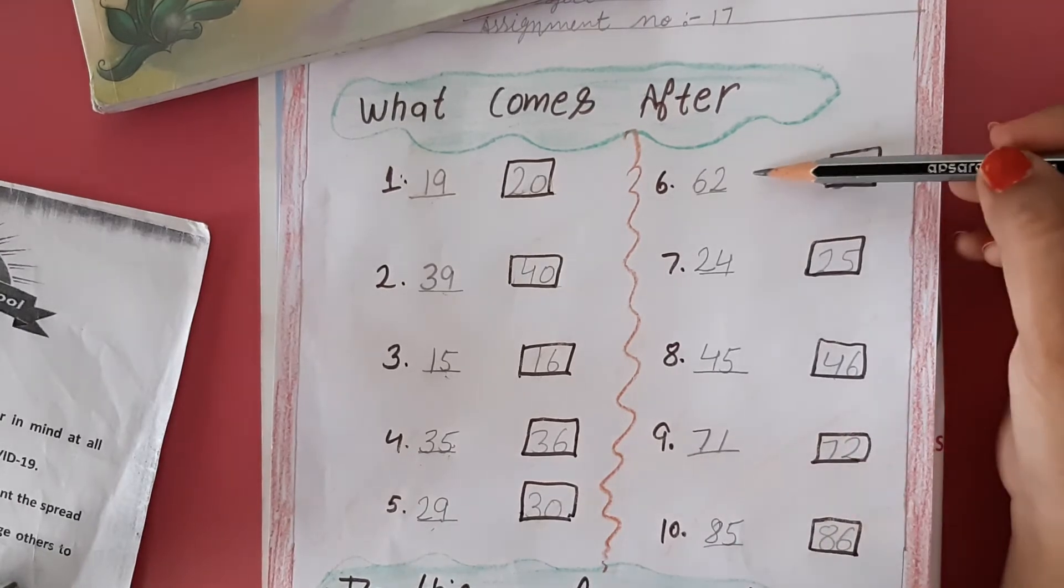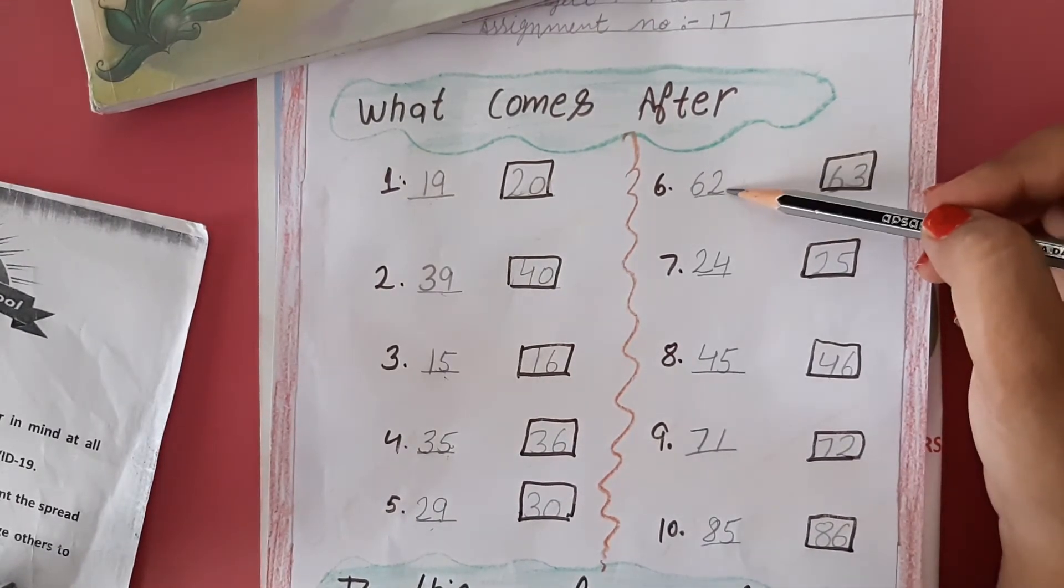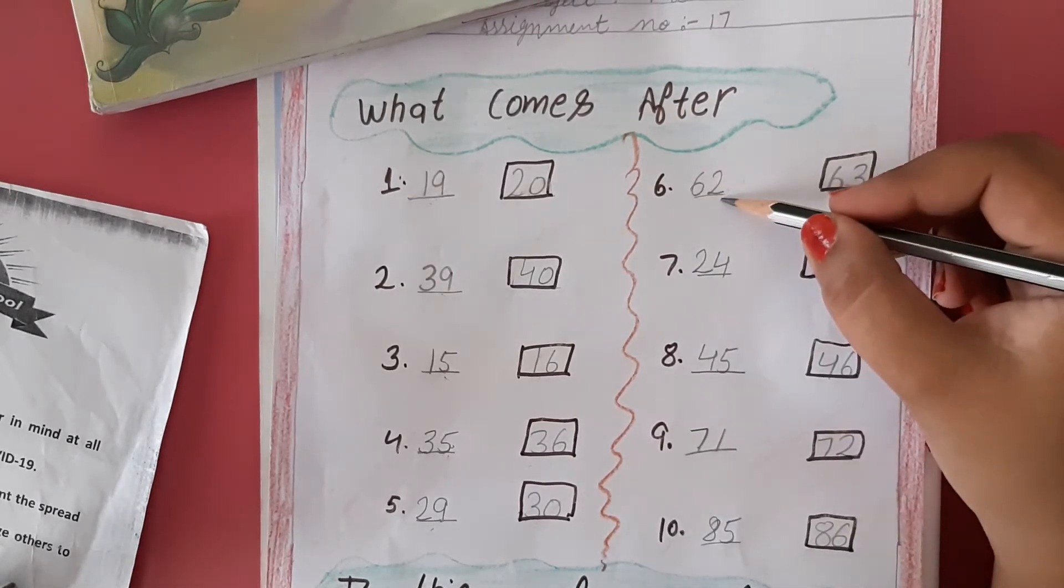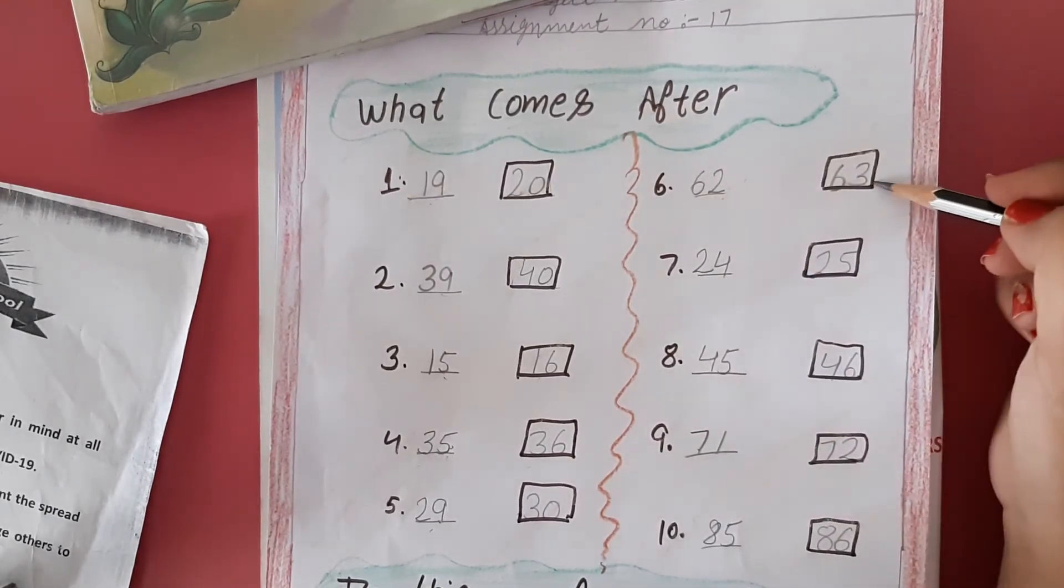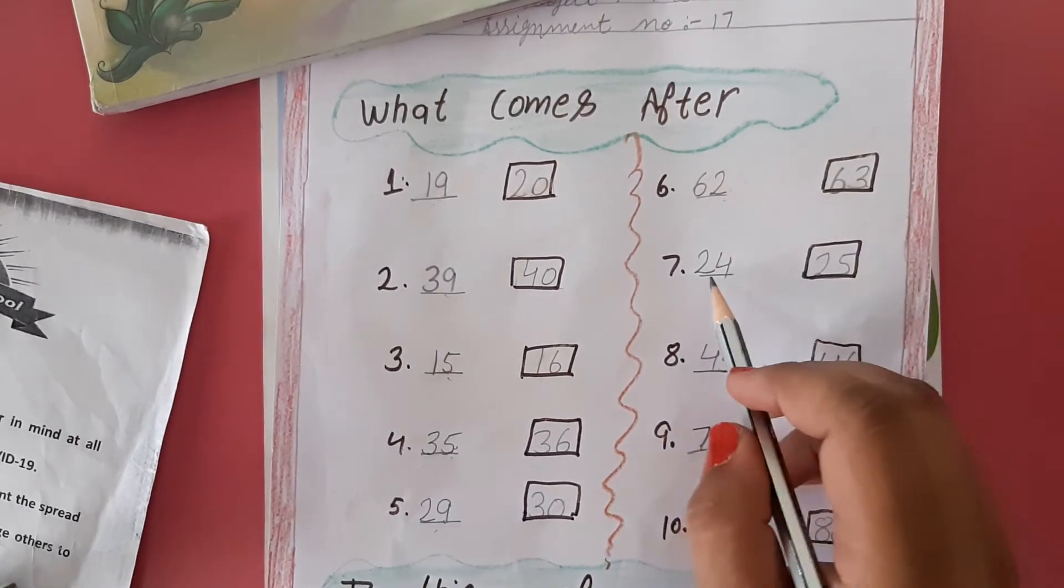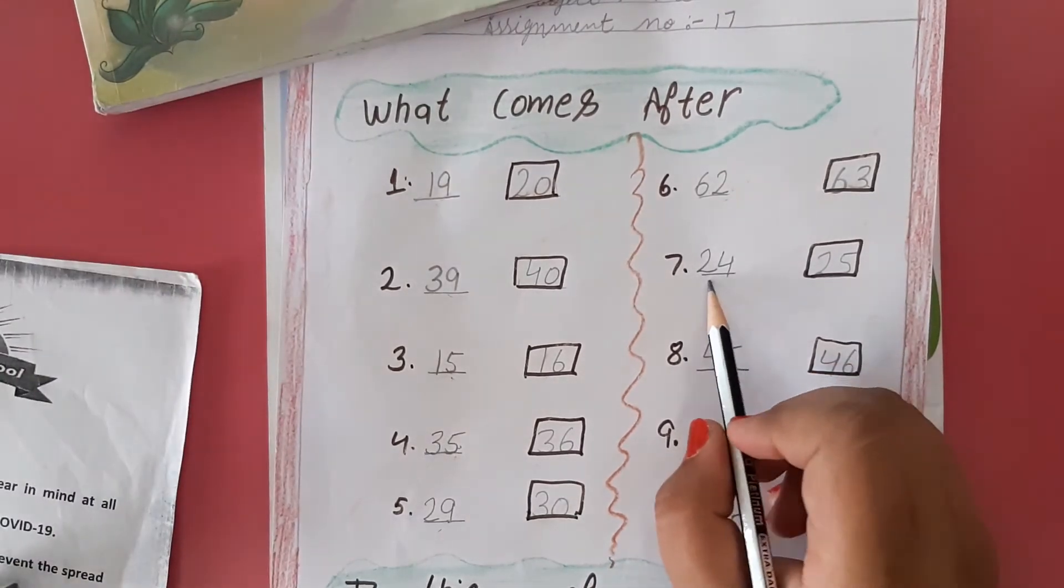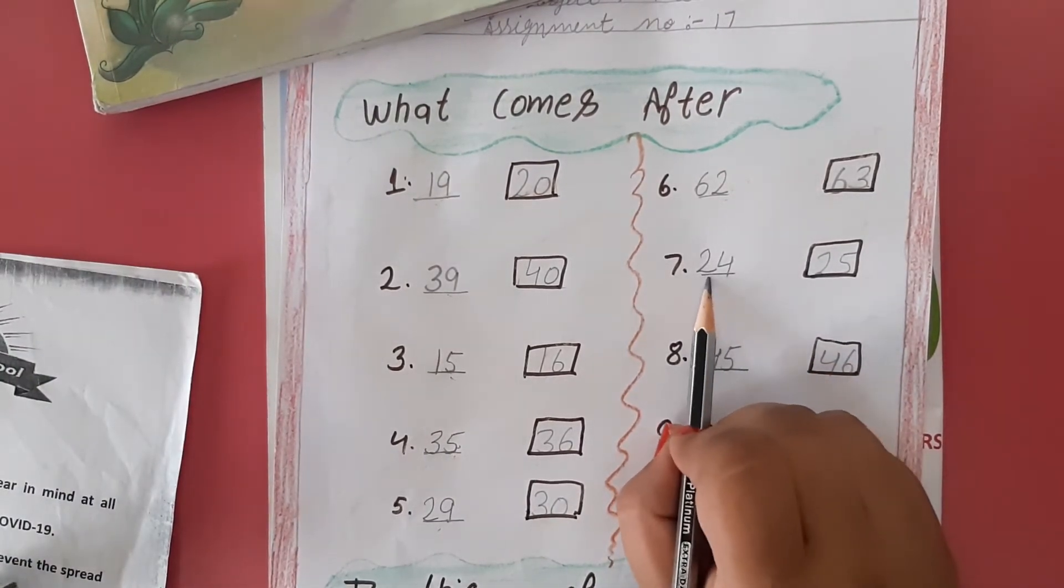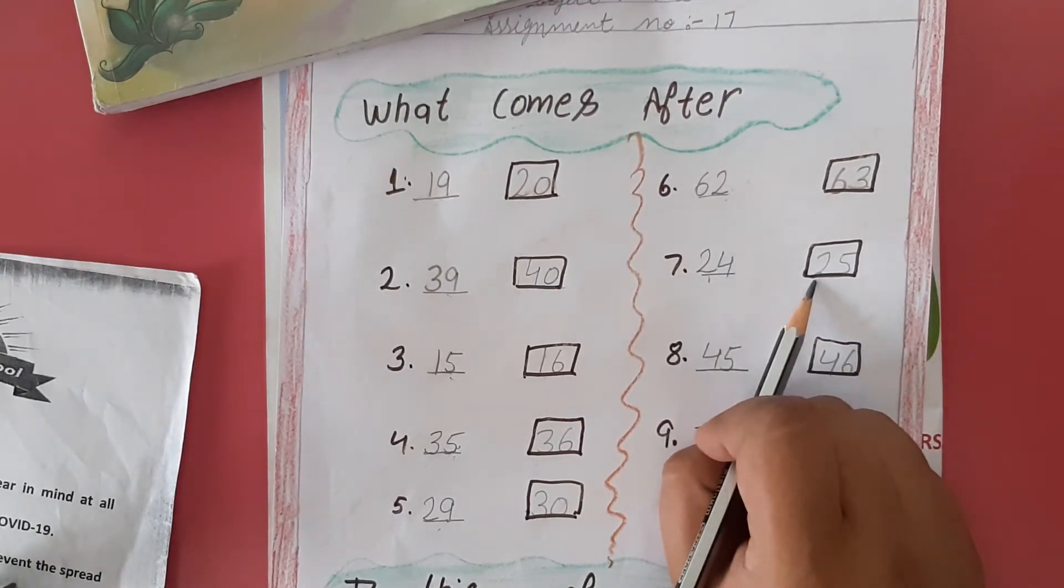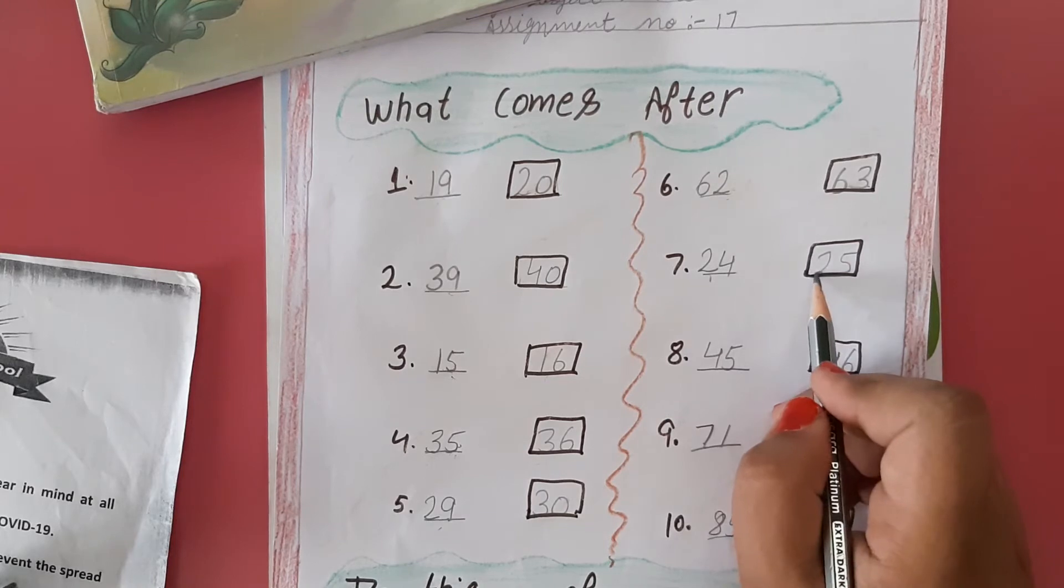Here, 62 is given. What comes after 62? That is 63, so we will write here 63. Next, 24 is given. What comes after 24? That is 25, so we will write here 25.